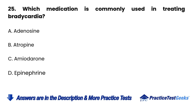25. Which medication is commonly used in treating bradycardia? A. Adenosine. B. Atropine. C. Amiodarone. D. Epinephrine.